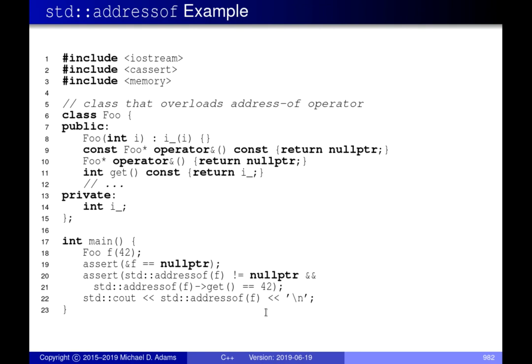To make this more concrete, I have a class called `foo`. One of the things it does is it overloads the address-of operator. What does it do? It returns a pointer to a `foo`, but it returns a null pointer. So basically if you take the address of any `foo` object, it says it's null — which is probably not what you'd want. But you can do this; it would probably not be a sensible use case.